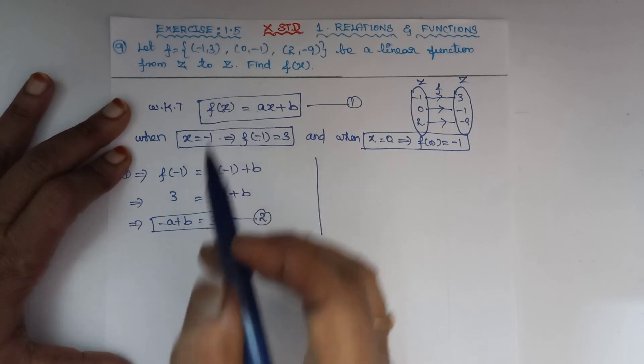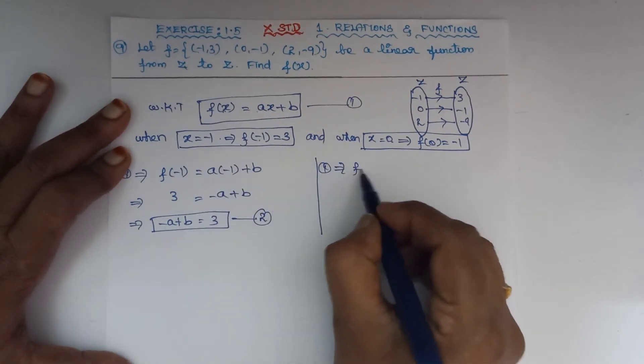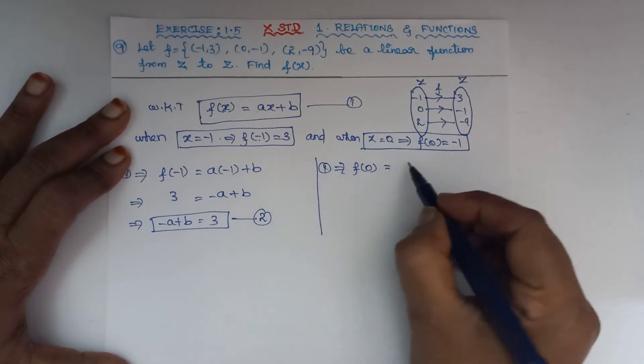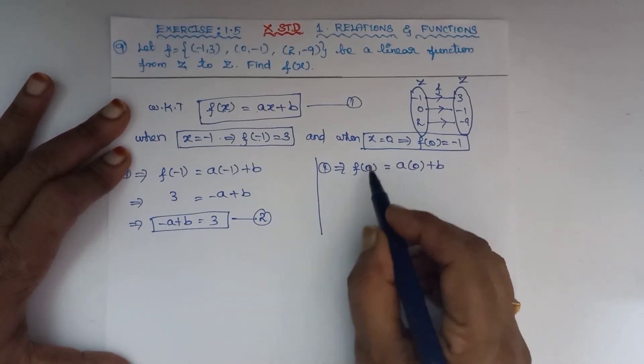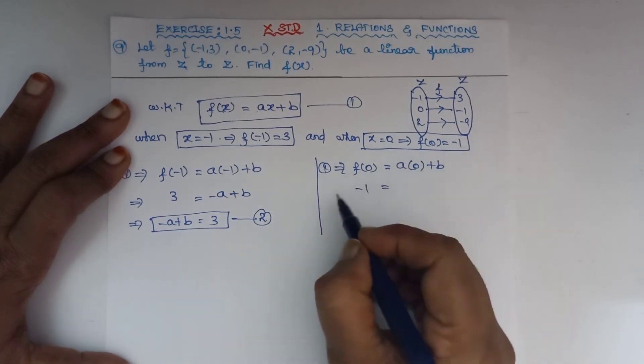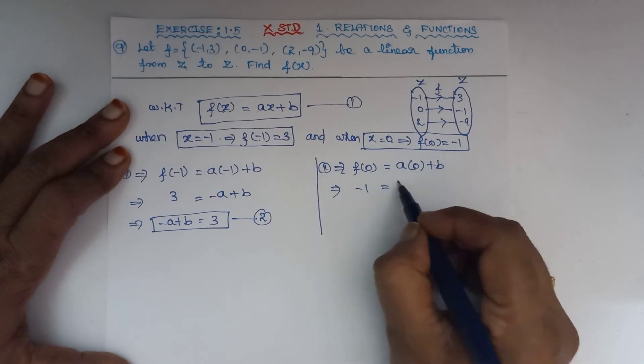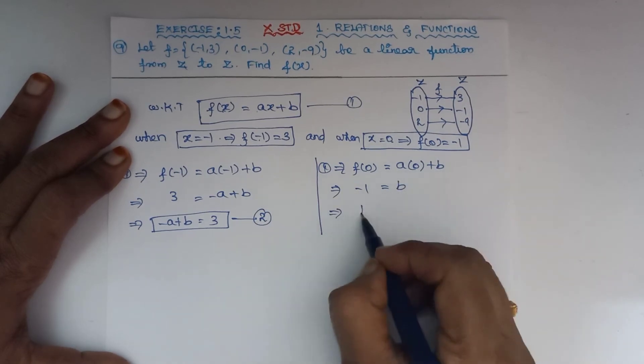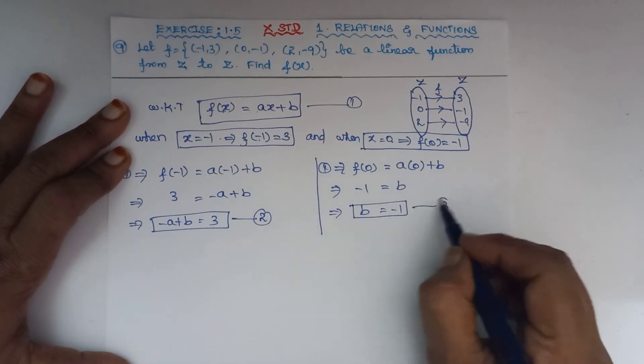From equation 2: a × 0 + b = f(0), which is -1. So -1 = a × 0, which equals 0, giving us b = -1. This is equation number 3.